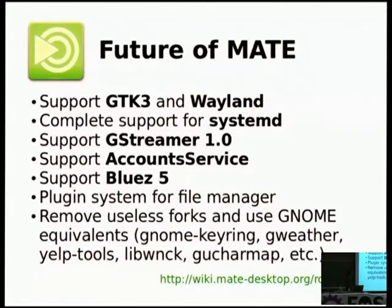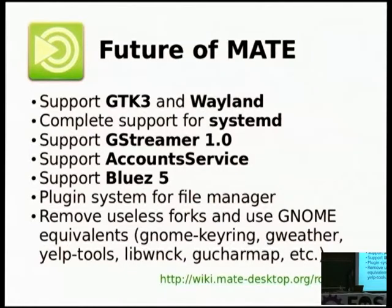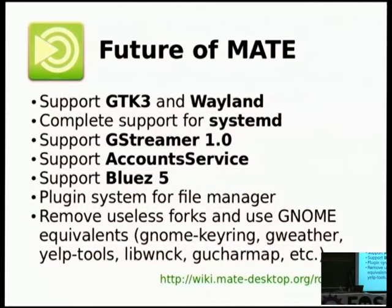We will remove redundant forks and use known equivalents. Since MATE is an alternative, we are working to remove as many forks as possible and use well-known equivalents like the Keyring Daemon, libraries like GWeather or WNCK, and EL tools for documentation. Some things on this list are already implemented in the unstable release of MATE, like the removal of forks and the initial GTK3 support.